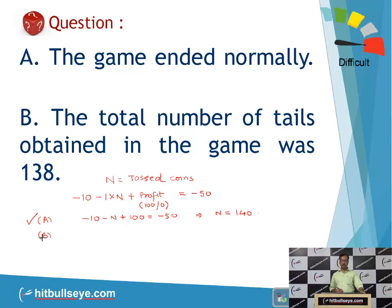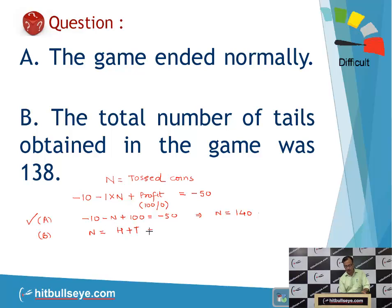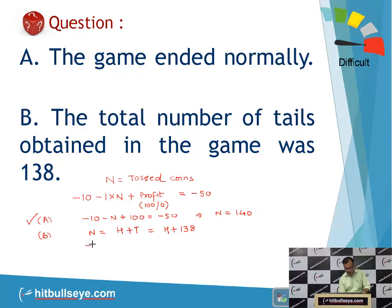Now for statement B, it says the total number of tails obtained was 138. Let us divide the total number of tosses into heads and tails. We do not know the number of heads, but the number of tails is given as 138. So we can write the new equation as: minus 10, minus the number of heads plus 138, plus the profit, equals minus 50.